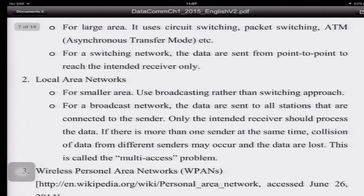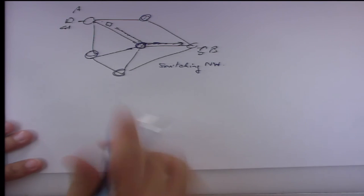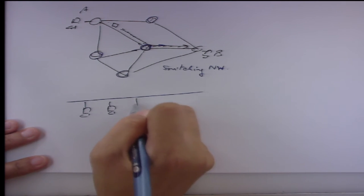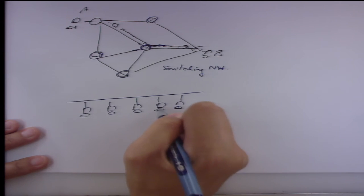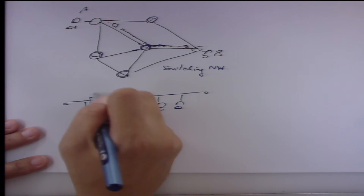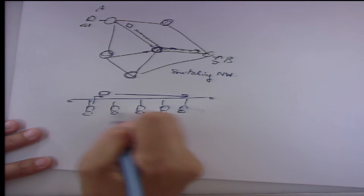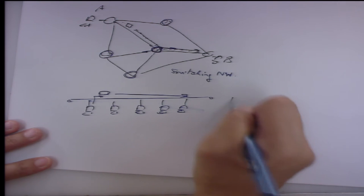Another type of network you may have heard of is local area networks, or LAN. This is very popular. The LAN is for a smaller area — maybe in a university like Kasetsart or in a building or small area. This one uses broadcasting instead of the switching approach. For broadcasting, if it's Ethernet you have a bus, and computers connect to this bus. When one transmits data, it sends to the end of the line, so everyone connected to this link will see it. This is called Ethernet.